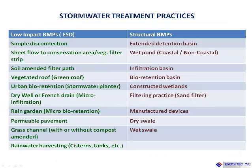Coming to stormwater treatment practices, the DCR Clearinghouse provides specifications and efficiencies for a number of low-impact BMPs like simple disconnection, vegetated filter strips, green roofs, stormwater planters, dry wells, rain gardens, permeable pavements, grass channels, and rainwater harvesting, as well as traditional structural BMPs like extended detention ponds, wet ponds, infiltration basins, bioretention basins, constructed wetlands, sand filters, swales, and specially manufactured devices.